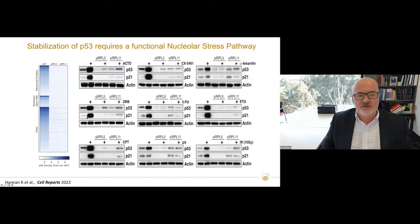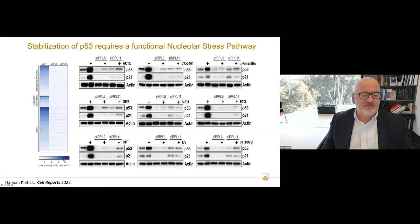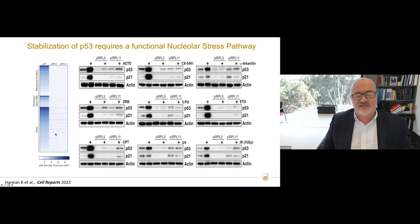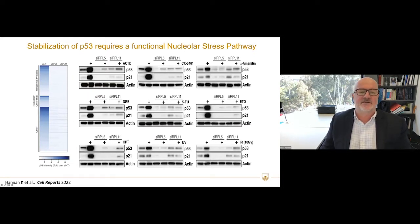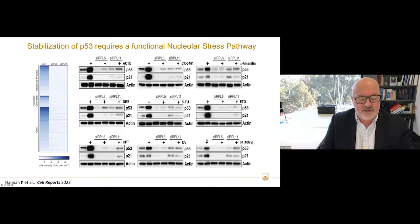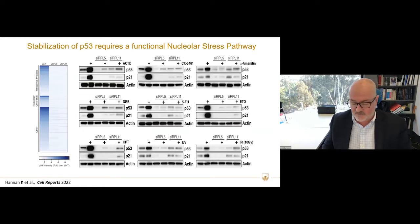Interestingly, it's not just direct inhibition of POL1 transcription that activates this pathway. A high-throughput screen shows that knocking down almost any gene involved in ribosome biogenesis activates P53, and knocking down L5 or L11 blocks that. Various treatments — actinomycin D, alpha-amanitin, etoposide, 5-fluorouridine, UV treatment, and irradiation — all require an intact nuclear surveillance pathway to stabilize P53, suggesting this is a primordial and probably one of the most important pathways for regulating P53.